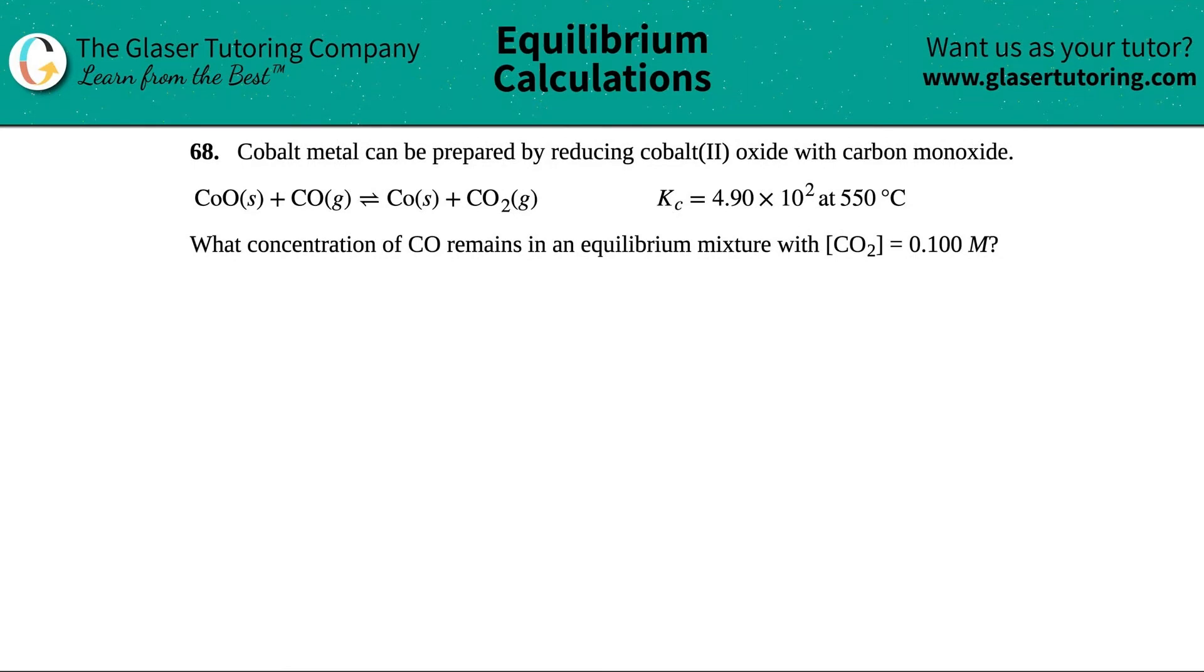Number 68. Cobalt metal can be prepared by reducing cobalt(II) oxide with carbon monoxide, and they give us this balanced equation. Well, it might be balanced, but maybe not - I don't see any coefficients in front of here. Whenever you don't see coefficients, just check, but we'll check in a little bit.